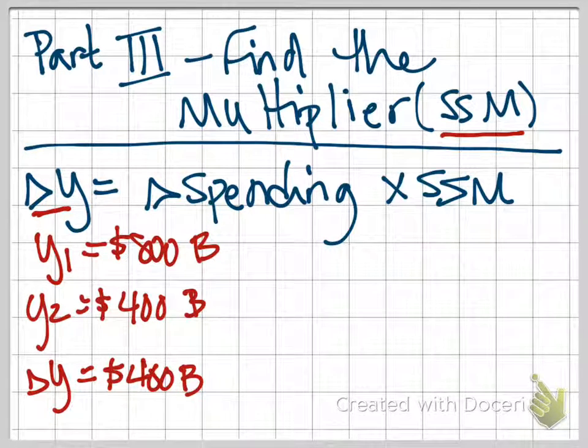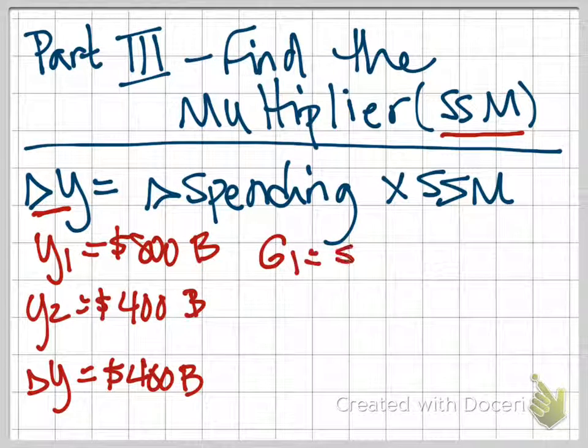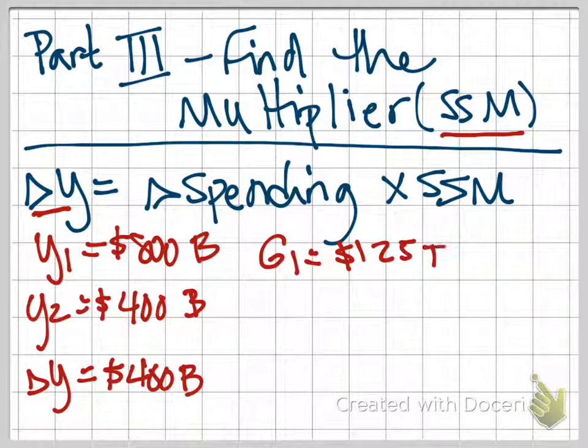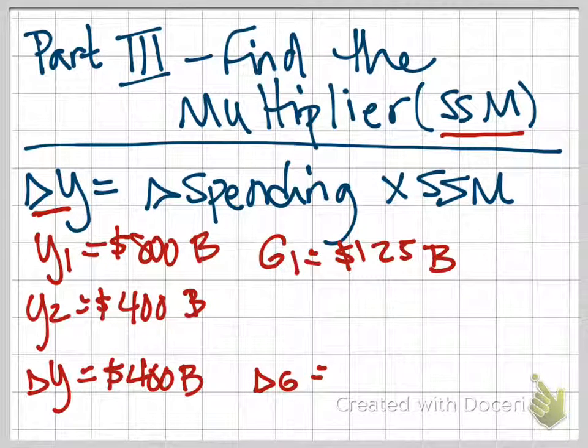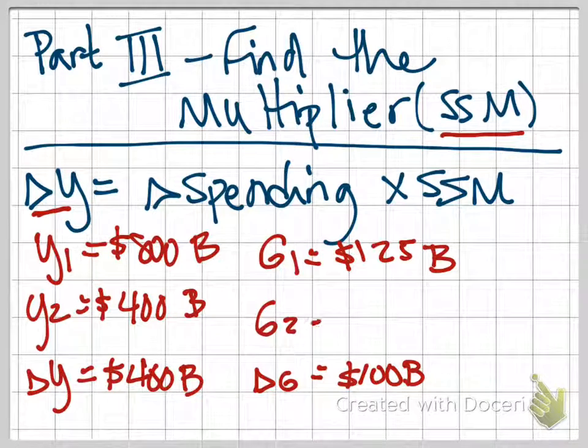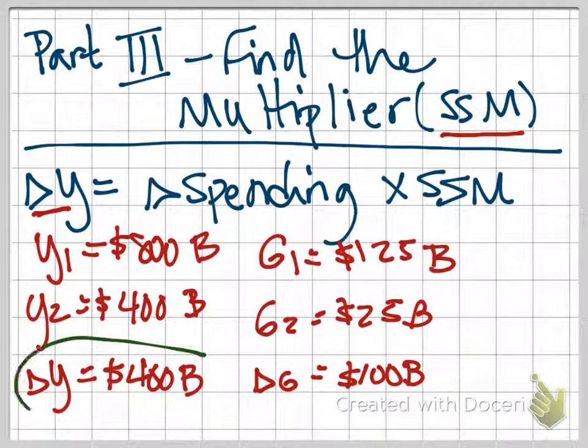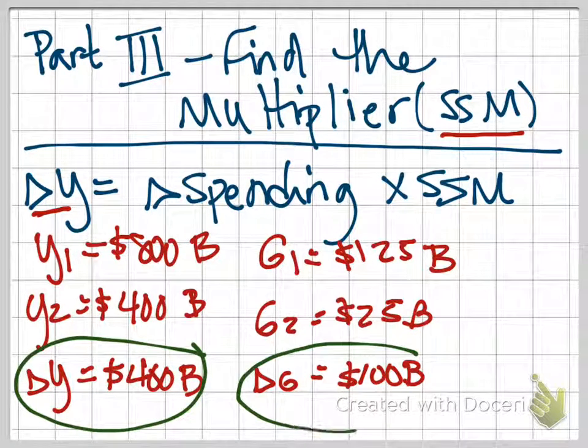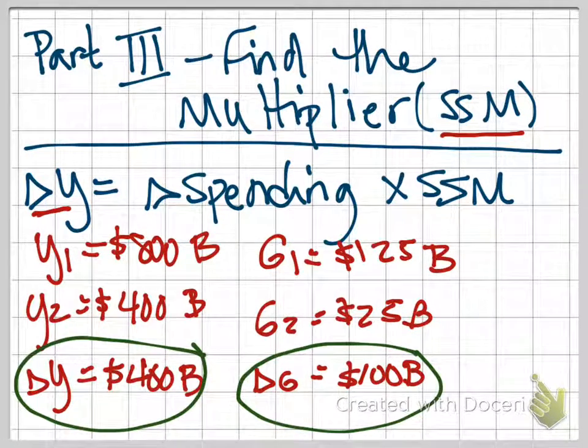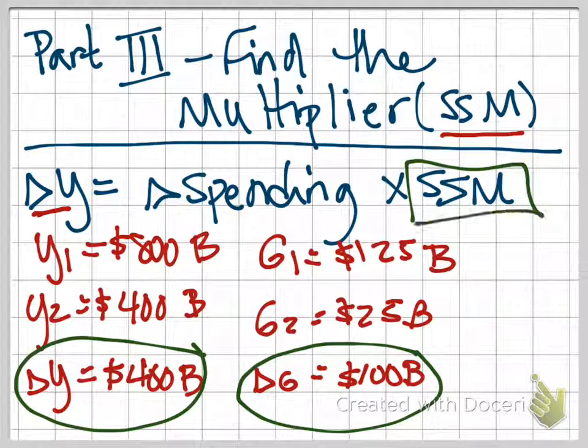Our government spending change, remember originally G1 was $125 billion. We're told it decreases by $100 billion, and so we saw that G2 was only $25 billion. We're going to use these values, this delta Y of $400 billion and this delta G of $100 billion, to find our Simple Spending Multiplier.